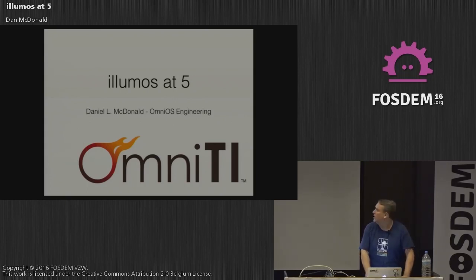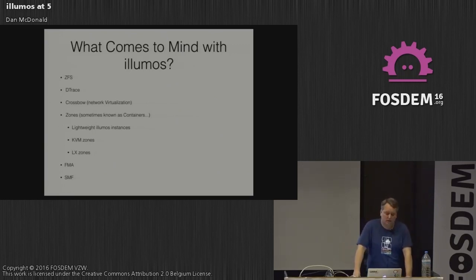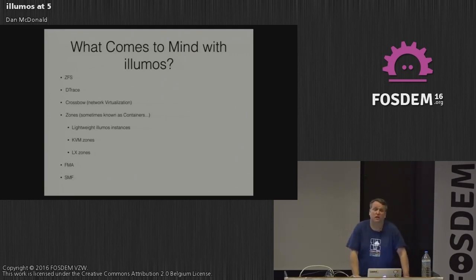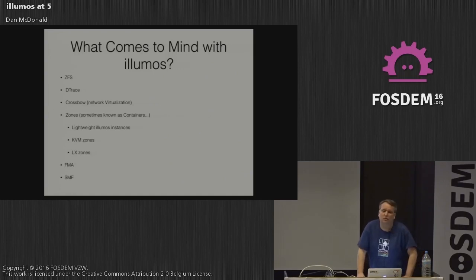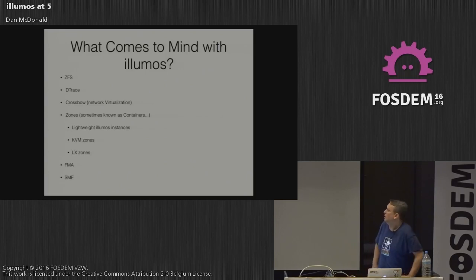Illumos is five years old this past August. When people think about Illumos, they tend to think about the features it inherited from OpenSolaris: ZFS, DTrace — Illumos is still the reference implementation for ZFS — Crossbow, which is network virtualization, and zones, which is getting a lot of press lately as containers, but we've had these in Illumos for a long time.